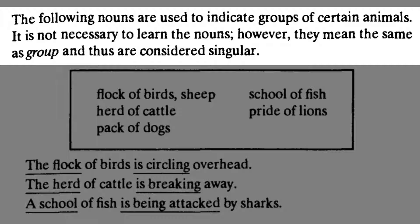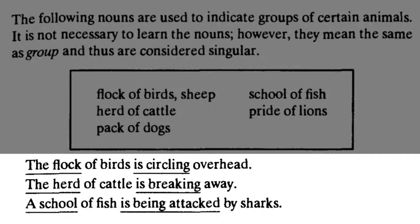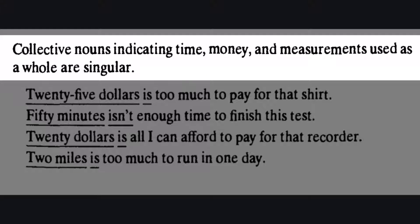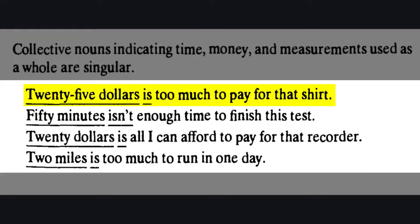You can see the examples here. Collective nouns indicating time, money, and measurements used as a whole are singular. You might be confused when you see $25 and think it will be plural, but it is not — it is singular because it is a collective noun. So '25 dollars' is money, and it will be singular.